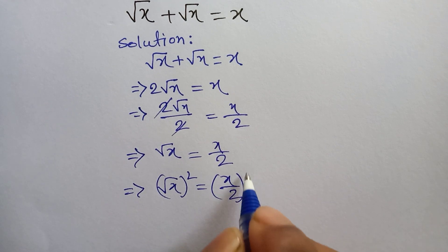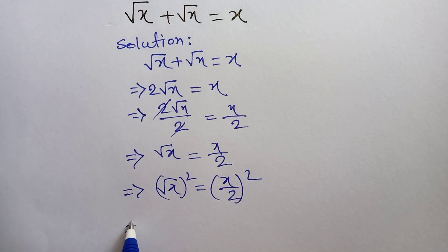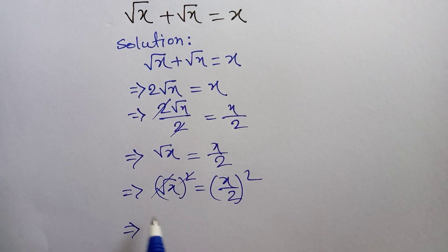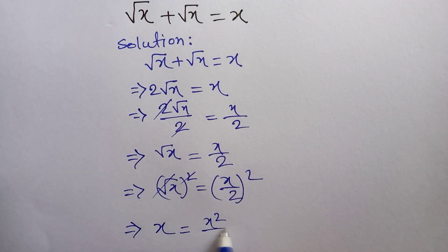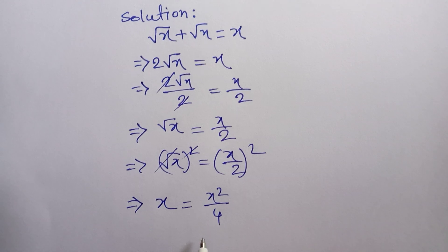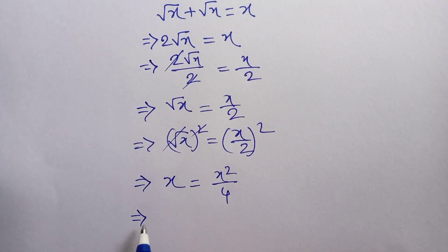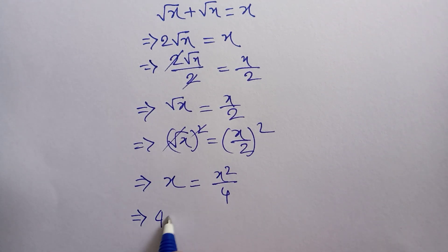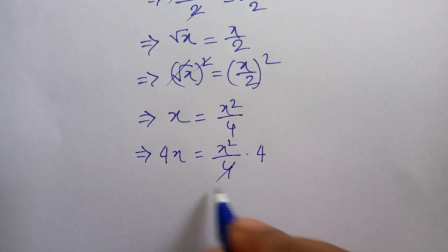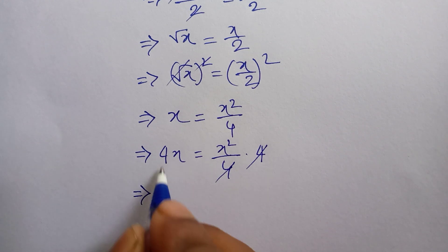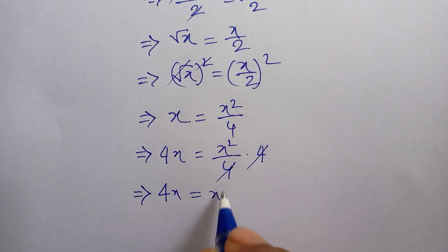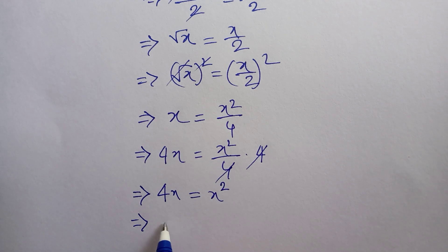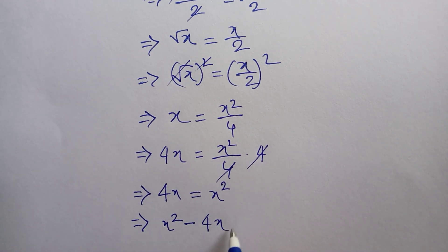This root and this square cancel, so we get x is equal to x squared over 4. Now we multiply both sides by 4, so 4x is equal to x squared over 4 times 4, and this 4 and this 4 cancel, giving us 4x is equal to x squared.